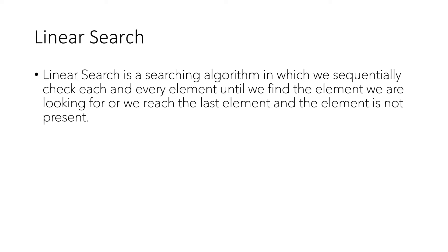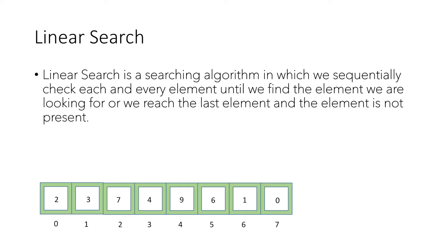Let's take an example. Suppose this is the array of elements given to us and we are looking for the number 4. The basic three steps we will follow in linear search are: